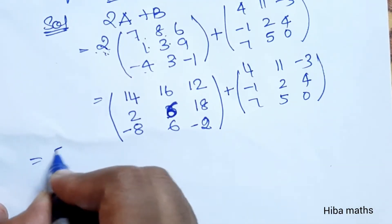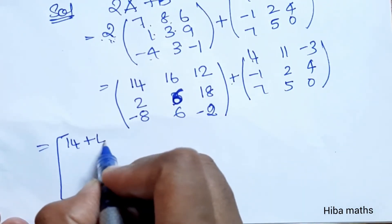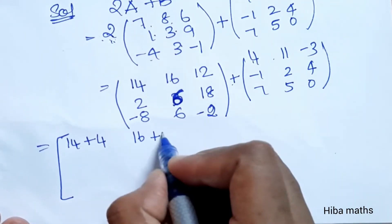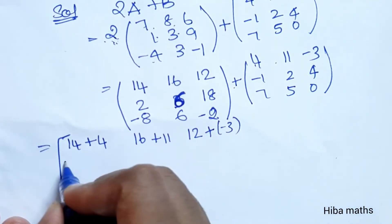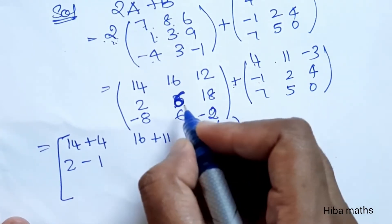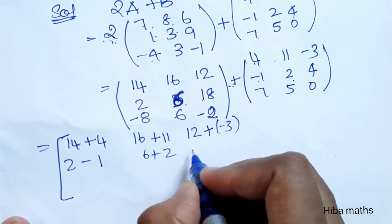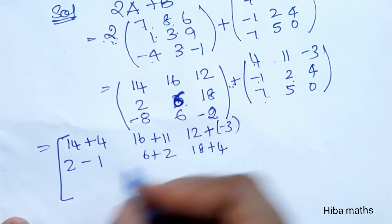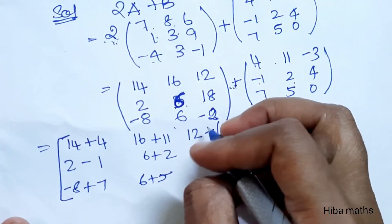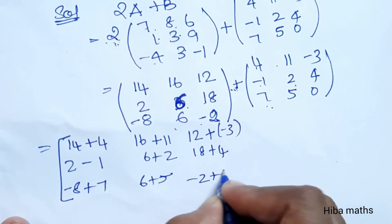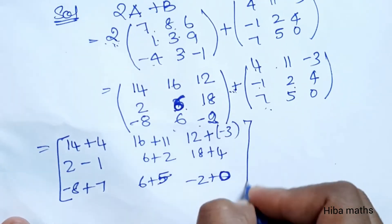Now we add the two matrices element by element: 14+4, 16+11, 12-3, 2-1, 6+2, 18+4, -8+7, 6+5, -2+0. Setting up each position: first row gives 14+4, 16+11, 12-3; second row gives 2-1, 6+2, 18+4; third row gives -8+7, 6+5, -2+0.